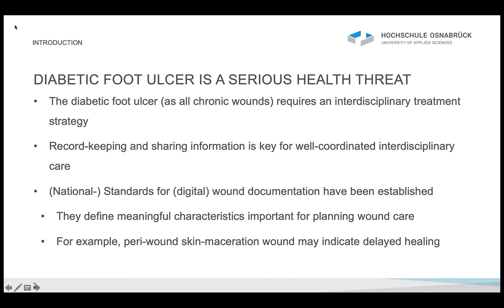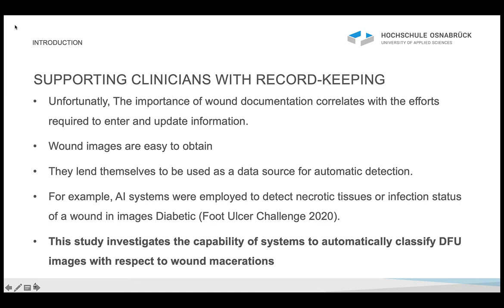These standards define meaningful characteristics that are important for planning wound care. For example, peri-wound skin maceration indicates delayed healing and is thus an important characteristic to share. However, the importance of record keeping correlates with the efforts to enter and update information, so time spent for documentation is not available for patient care. Wound images are easy to obtain and lend themselves to be used as a data source for automatic detection through statistical models like deep neural networks.